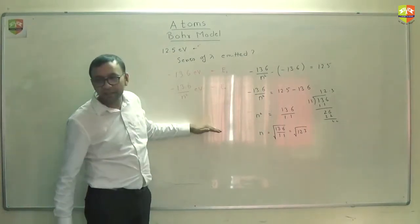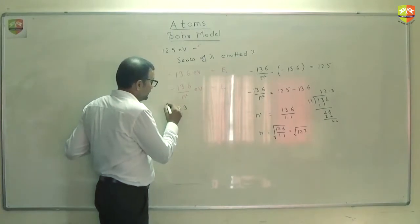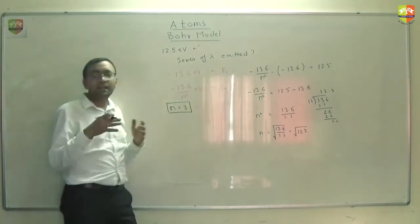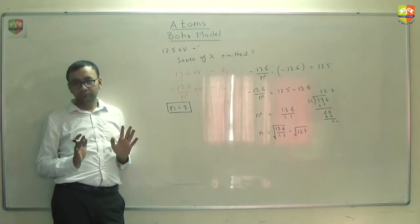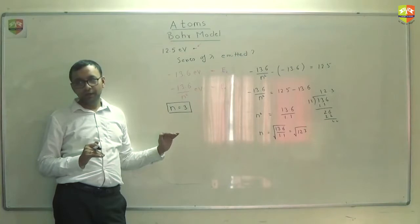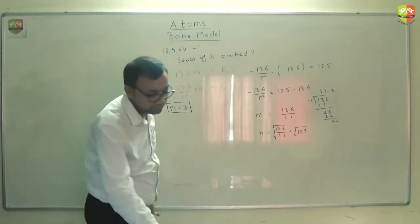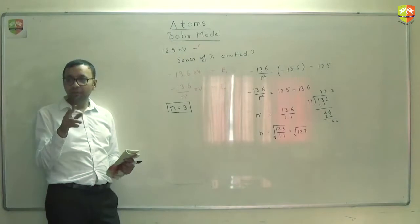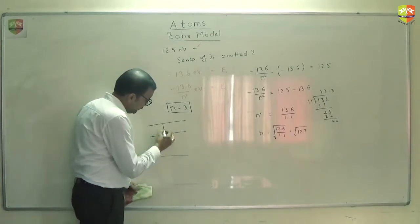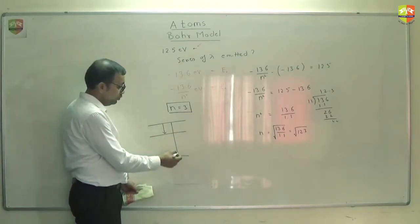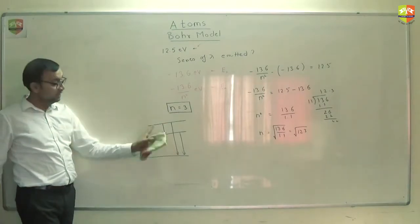It will not go up, it will be at n equal to 3. Now tell me, once it is at n equal to 3, what all series it can emit? It can go to n equal to 1 or it can go to n equal to 2. So the lowest level tells you which series it is. There is a transition between 2 levels, lower of these 2 levels. So when it makes a transition from 3 to 2, it is Balmer, and when 3 to 1, Lyman, and 2 to 1 is also Lyman. So 2 Lyman series and 1 Balmer series.